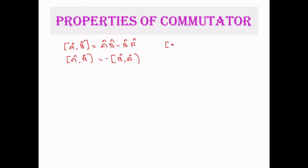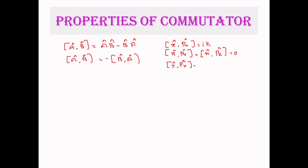The commutator of operators A and B is defined as [A,B] = AB minus BA. And also [A,B] = minus [B,A]. The value of [x, px] is iℏ, but the values of [x, py] and [x, pz] are 0. Similarly, [y, py] = iℏ, while [y, px] and [y, pz] are 0. In general, [qj, pk] = iℏ·δjk. So the existing commutator brackets are [x,px], [y,py], and [z,pz], all equal to iℏ, and all other commutator brackets are 0.